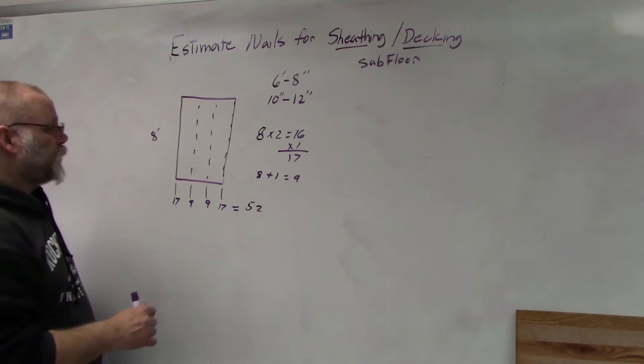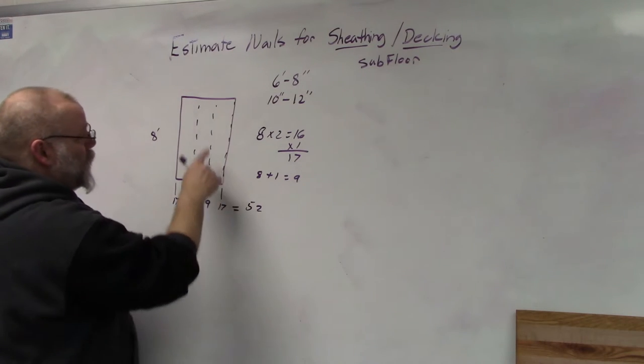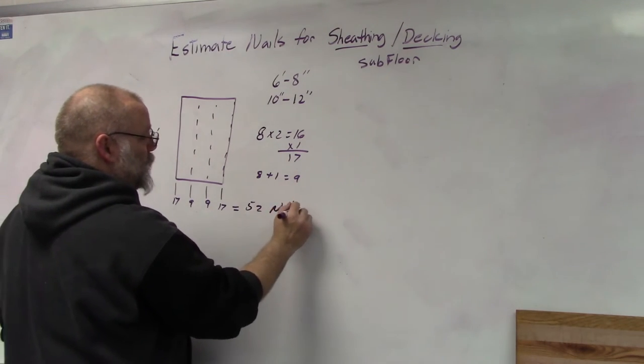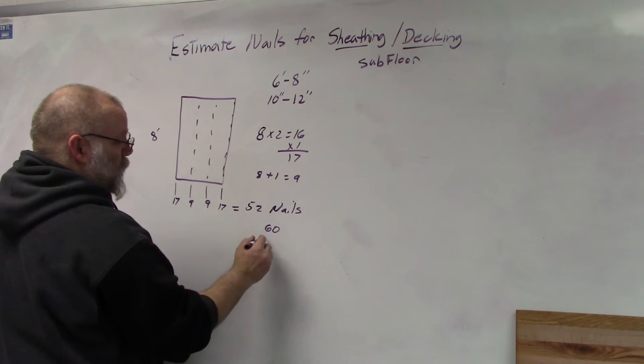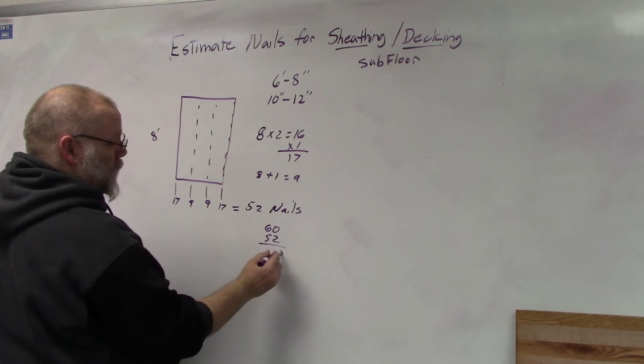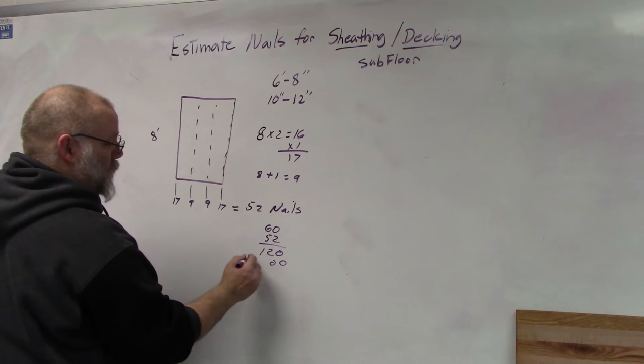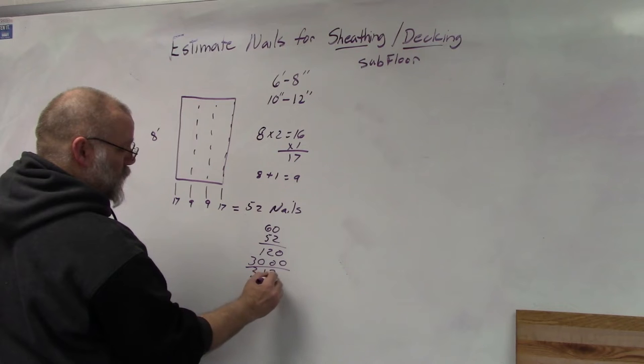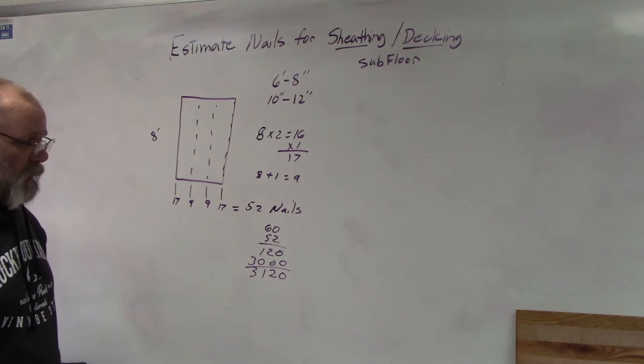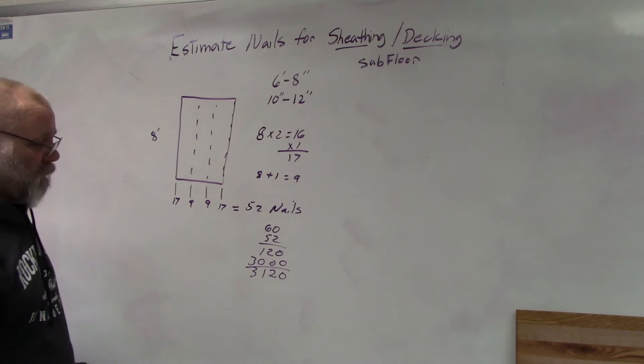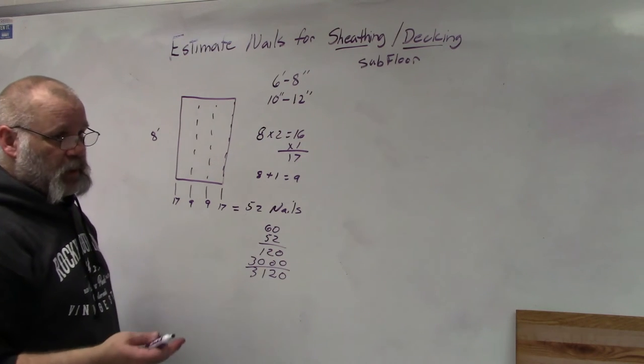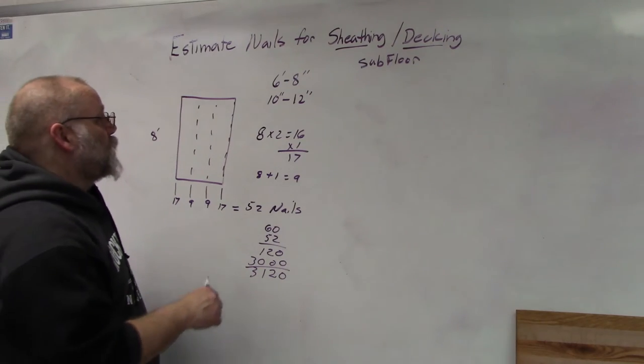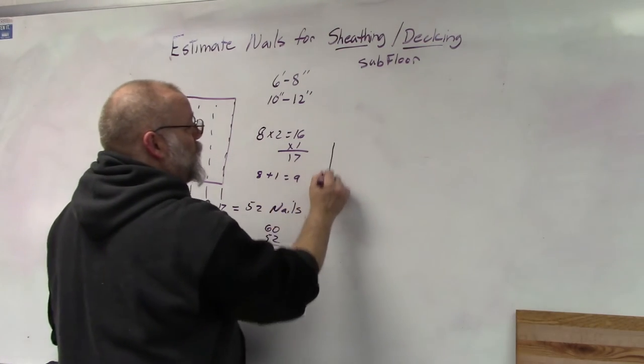One sheet of plywood would be 52 nails, and if I'm putting 60 sheets on my house, that would be 3,120 nails, which is about a box and a half. With nails running anywhere from 50 to 100 dollars a box, it adds up pretty quick.